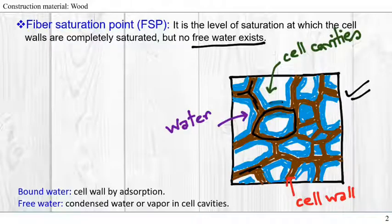This gives us a chance to define bound water and free water. The water that is absorbed into the cell wall is called bound water. When there is water in the form of condensed water or vapor in cell cavities, it's called free water. In this picture we can see there is no free water, so this is the scenario when we call fiber saturation point: when all cell walls are completely saturated with water but there is no free water in the cavities.